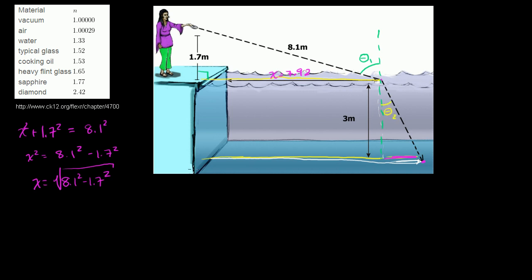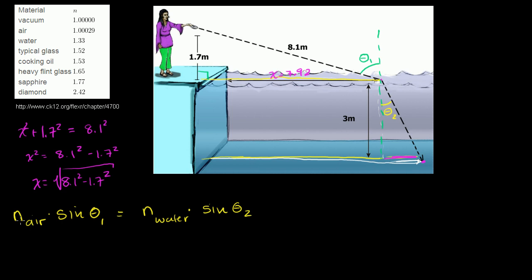This is our incident angle θ1, and this is our angle of refraction θ2. Snell's Law states: the index of refraction for this medium — air — times the sine of θ1, is going to be equal to the index of refraction for water times the sine of θ2. We can look up those indices from the table. We'll solve for θ2 and use a little trigonometry to figure out the incremental distance.